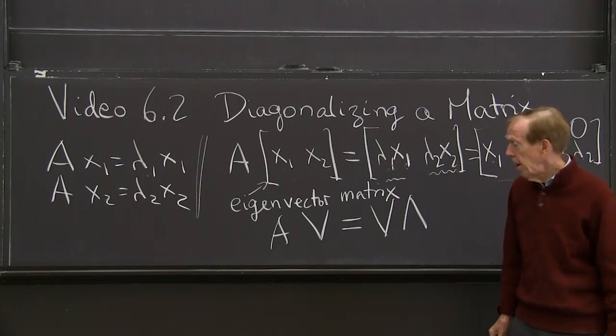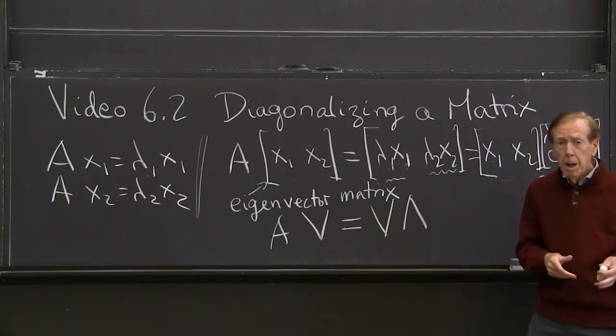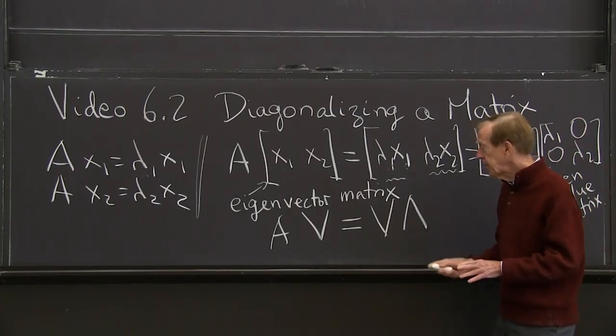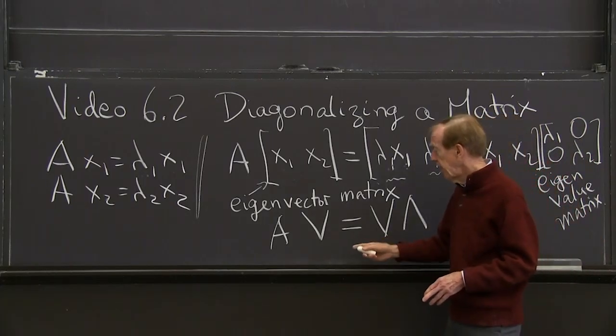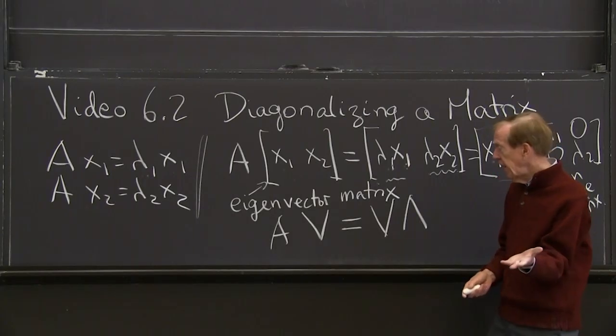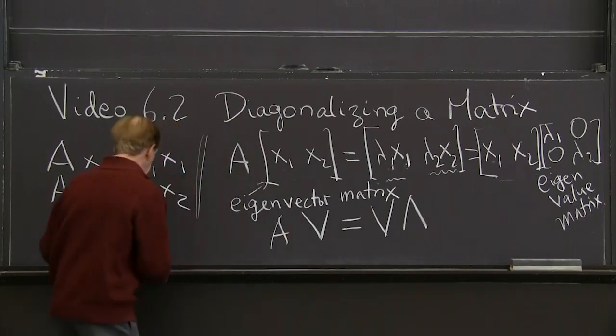Good, good. But now, now that I have it in matrix form, I can mess around with it. I can multiply both sides by V inverse. If I multiply both sides by V inverse, I discover, well, shall I multiply on the left by V inverse? Yes, I'll do that. If I multiply on the left by V inverse, that's V inverse A V.